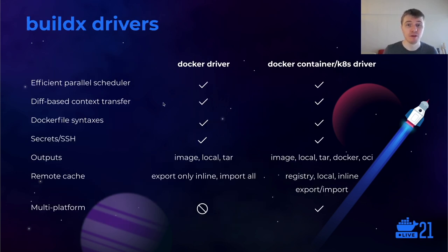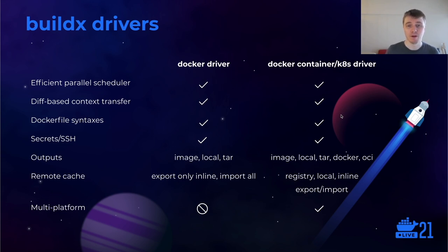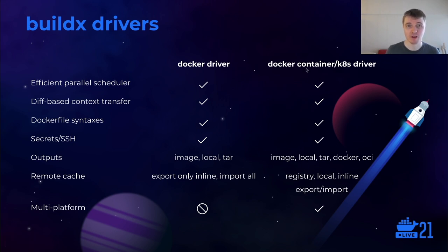Let's talk about the importance of those backends or drivers. Builders can talk to different installations of the BuildKit engine. One way is a variant of BuildKit already built into your Docker engine — this is the docker driver. But there are other ways: a standalone BuildKit instance can be running in a container or in a Kubernetes cluster, and those are the drivers you use to connect to that BuildKit. Importantly, if you want to build multi-platform images, you need to use those drivers — either the container or the Kubernetes driver.